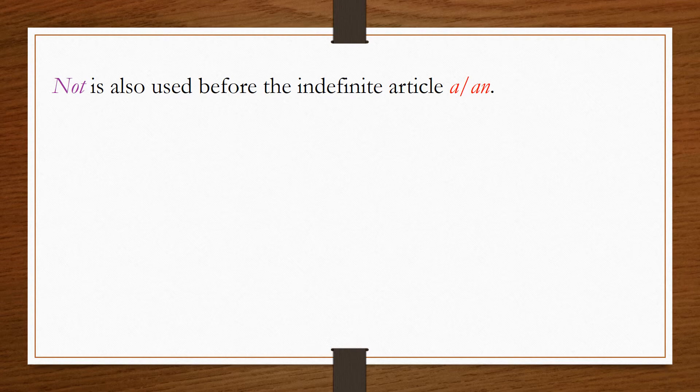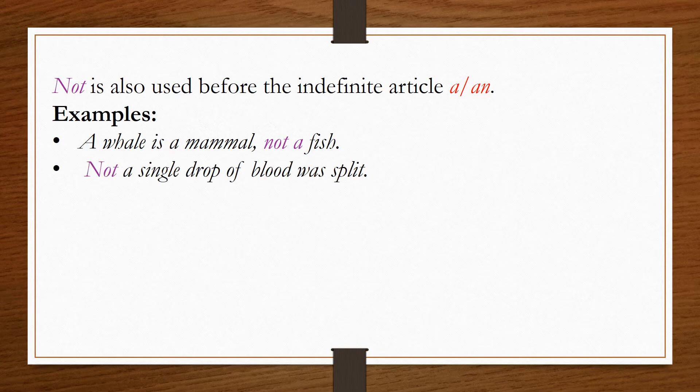Not is also used before the indefinite article a or an. For example, a whale is a mammal, not a fish. Another example would be, not a single drop of blood was spilled.